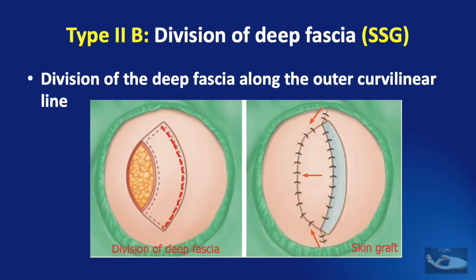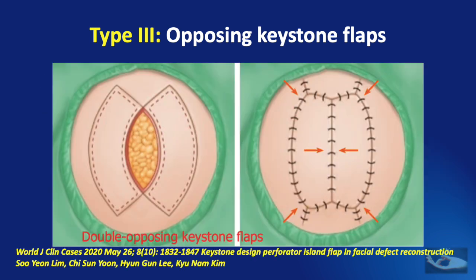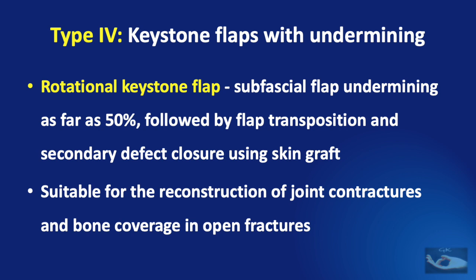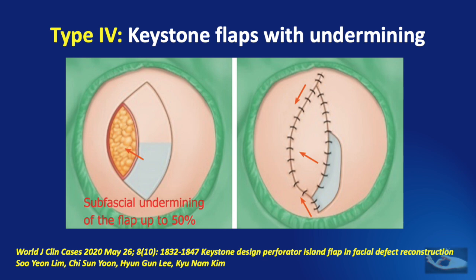Type 3 refers to opposing keystone flaps — a double keystone flap — used for larger defects up to 5 to 10 centimeters. It can be used for closure of pilonidal sinuses and after wide excision of deep melanomas. Type 4 refers to the rotational keystone flap, where subfacial flap undermining is done up to 50%, followed by flap transposition and secondary defect closure using a skin graft. This is suitable for reconstruction of joint contractures and bone coverage in open fractures.